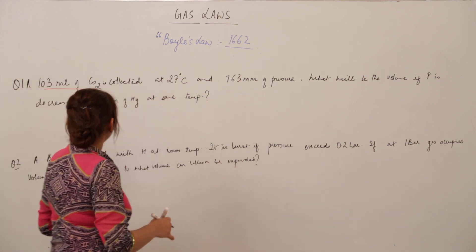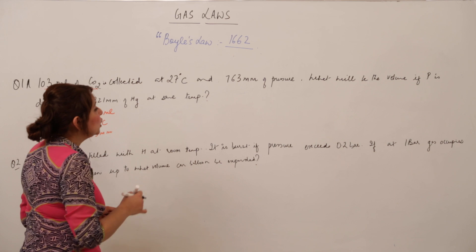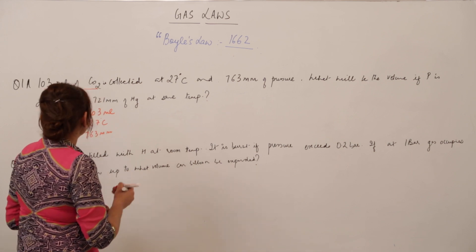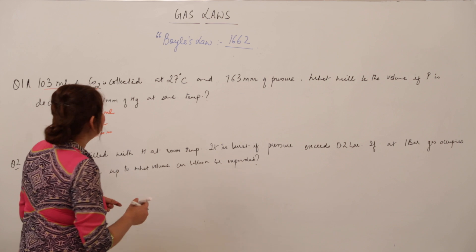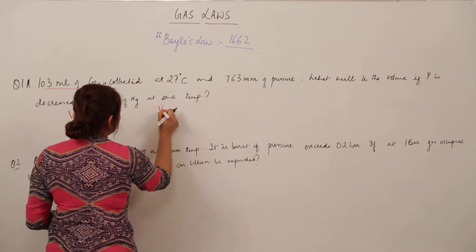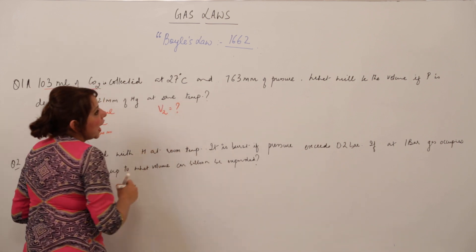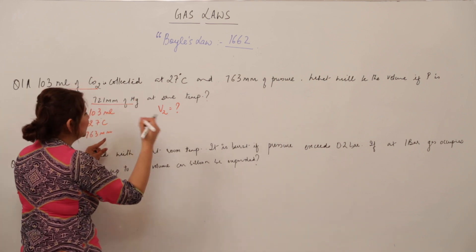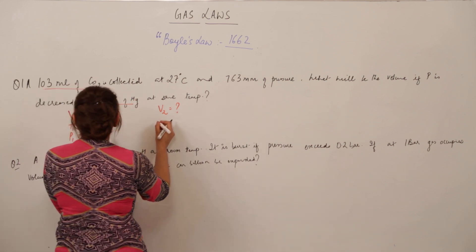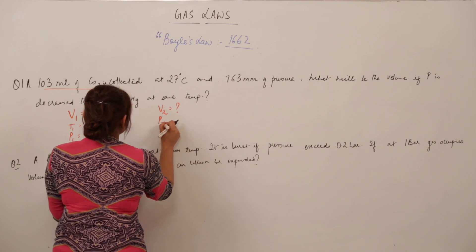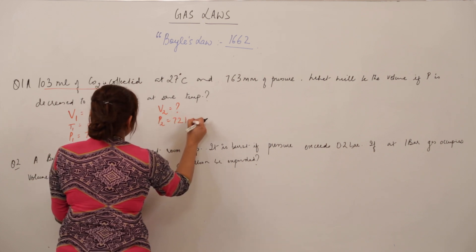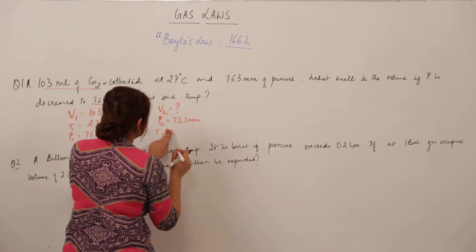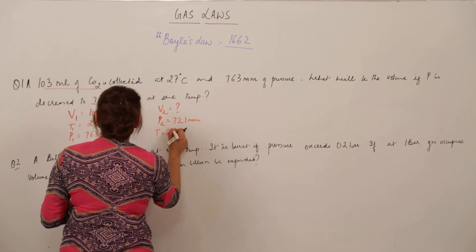The question asks: what will be the new volume V2 if the pressure is decreased to 721 mm of mercury? So the pressure is being decreased and we need to find V2. The temperature remains the same throughout.